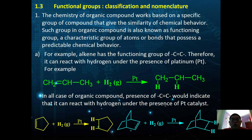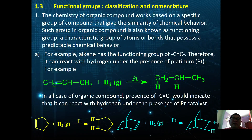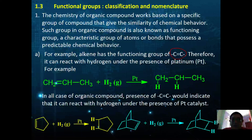The chemistry of organic compounds works based on their specific group of atoms in terms of chemical behavior. Such a group in an organic compound is known as a functional group — a characteristic group of atoms that gives predicted chemical behavior. For example, we know that alkene has the functional group of C double bond C.